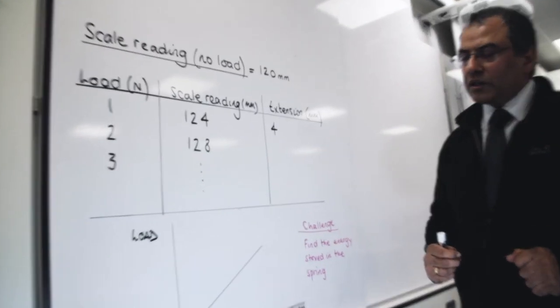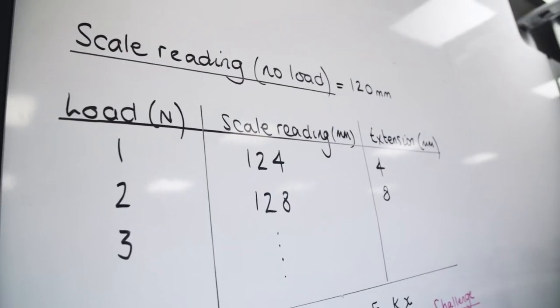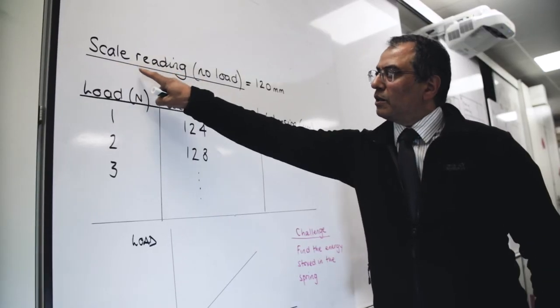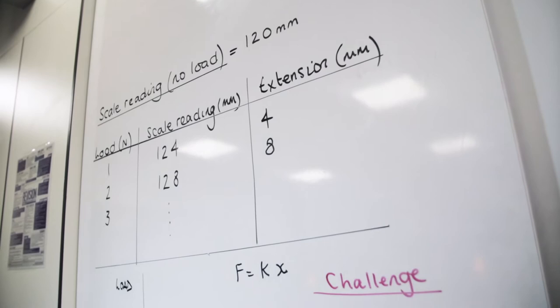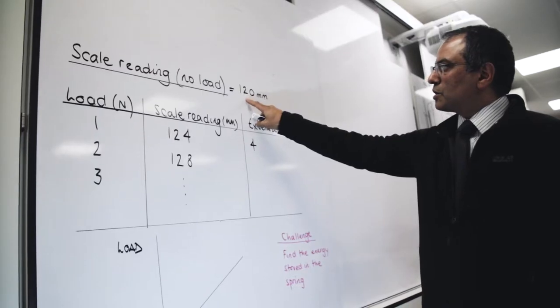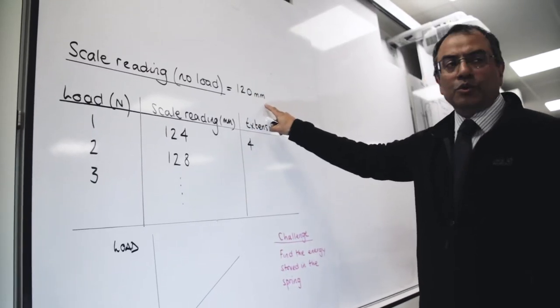Here is just a sample of results taken earlier. You take the scale reading, that is the reading of the pin against the scale, and let's just suppose that is at 120 millimeters.